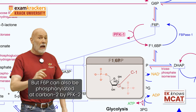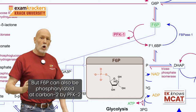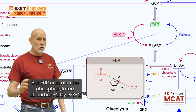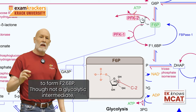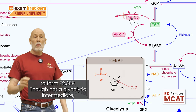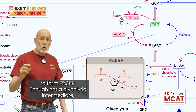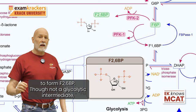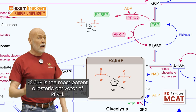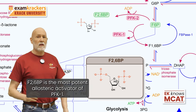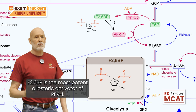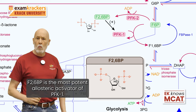But F6P can also be phosphorylated at carbon 2 by PFK2 to form F26BP. Though not a glycolytic intermediate, F26BP is the most potent allosteric activator of PFK1.